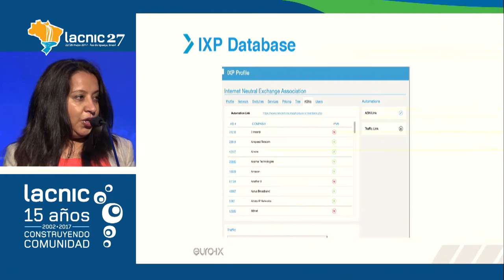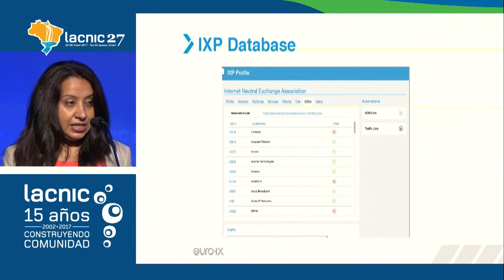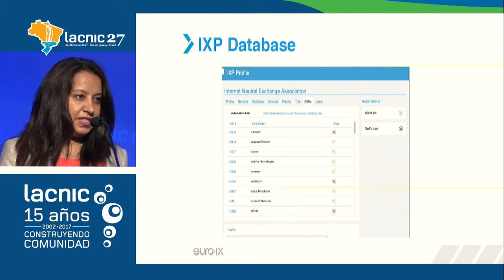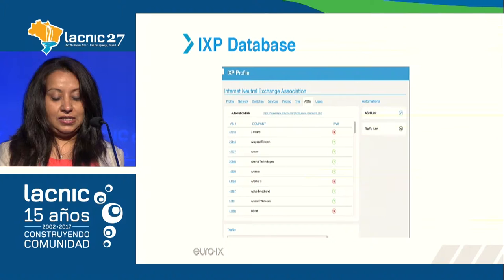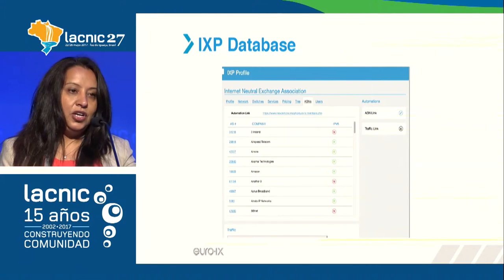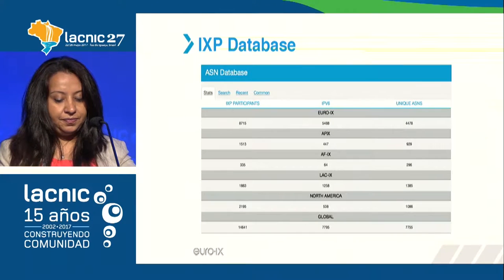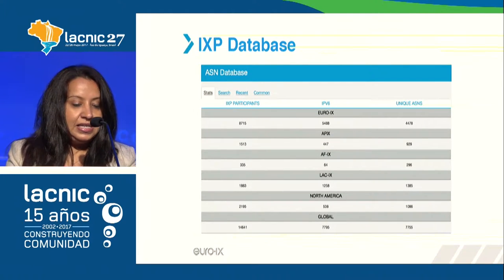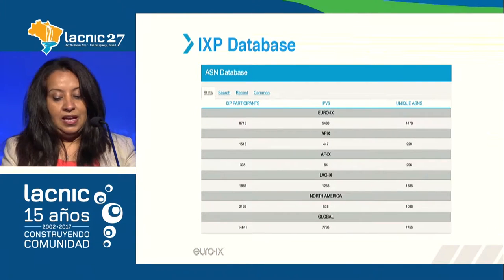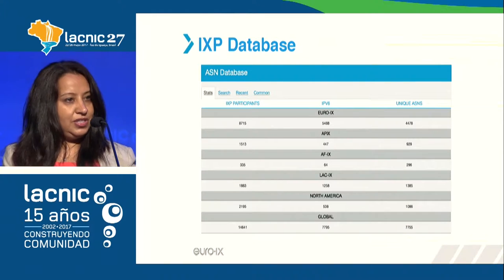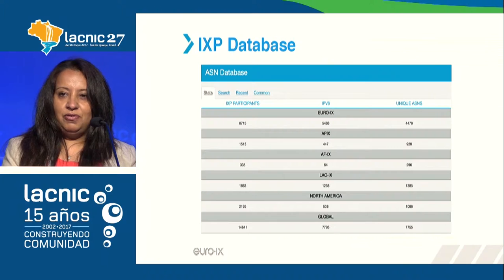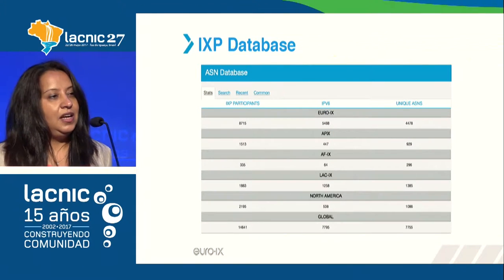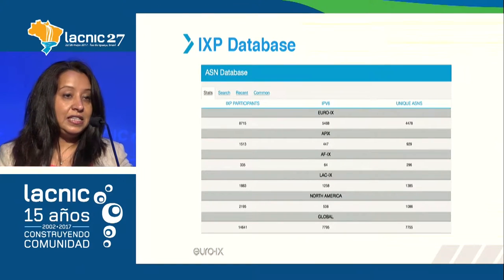Other information available on the database includes the different ASNs connected to the exchange point, pricing, and different services. We also have an ASN database, which is a summary of all the different ASNs found in each region and globally. There is also a list of unique ASNs found in each region, which is quite an interesting number — it helps peering coordinators determine which exchanges to go to if they're looking for specific ASNs they want to connect to.